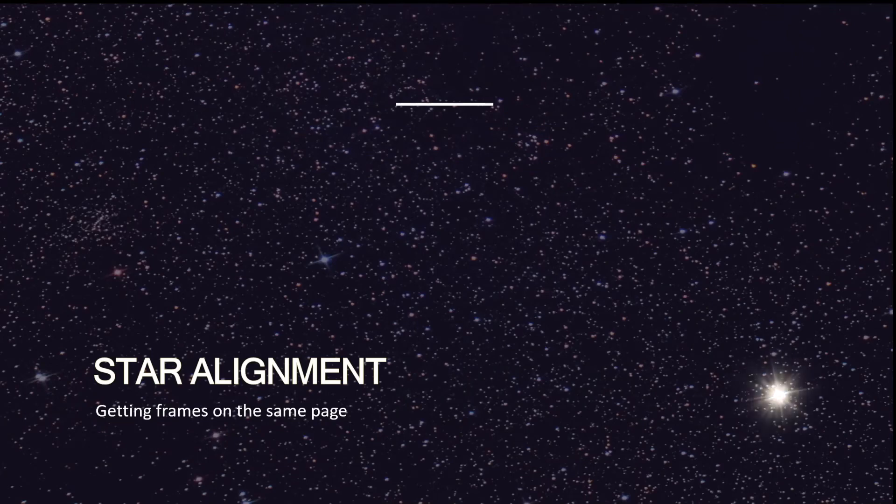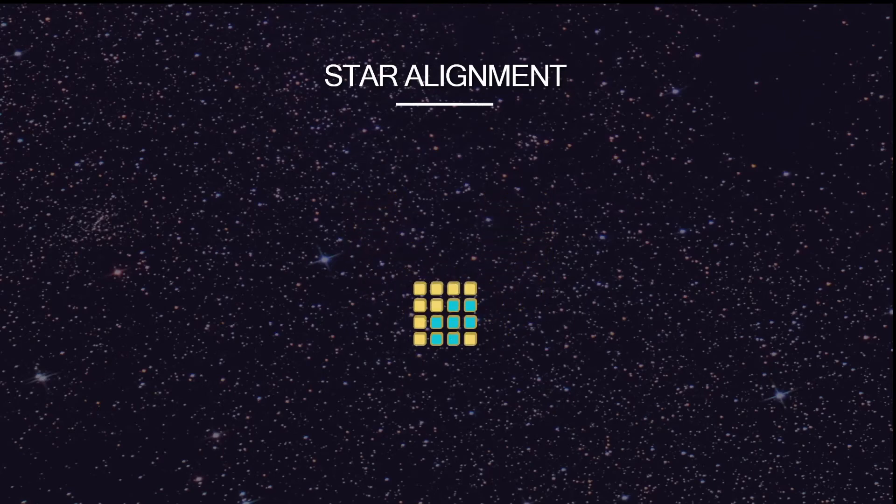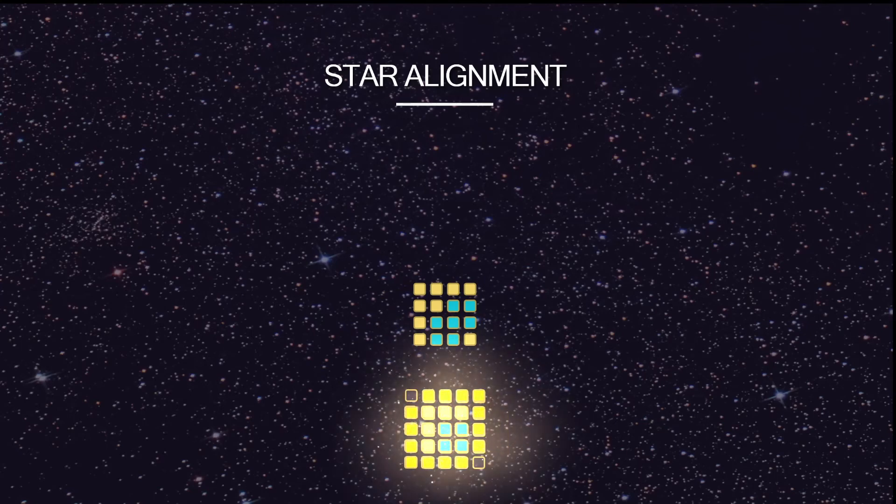The next step in the process is star alignment, or getting the frames to align correctly so that they can be stacked. The concept's like this. Let's say you've taken two pictures of the same star, but the star's shifted in the frame. The star is represented by the blue pixels. And you can see it's down in the center bottom on one picture and it's in the center right on the other. If we were to combine these frames, we would get something that looked like this, which would be a stretched out star and is not the desired result. What would be better is if we could detect stars based on patterns relative to other stars and use those as the points to overlay the images so that we get the star in the correct place.